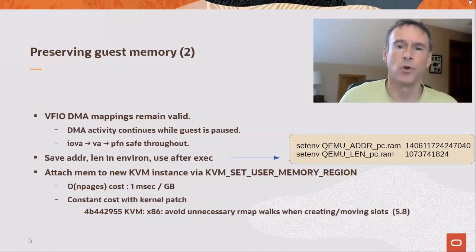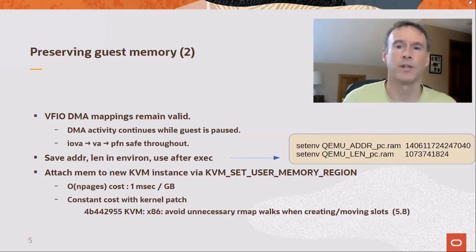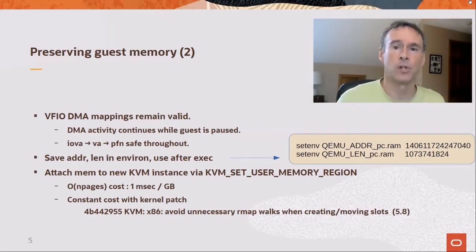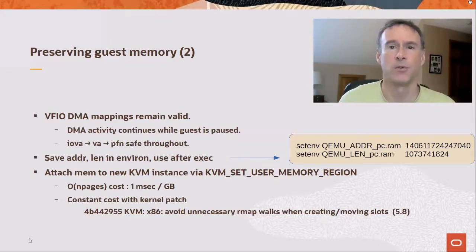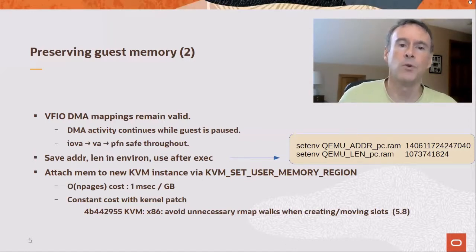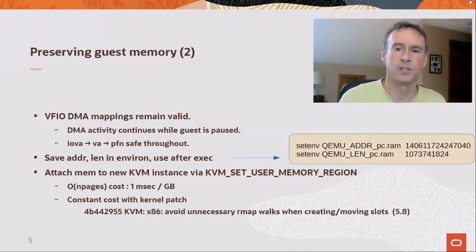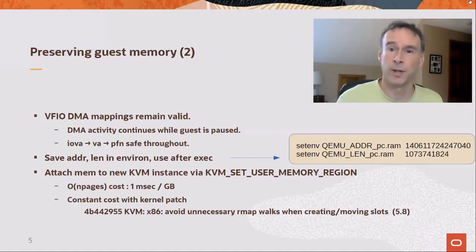When madvise is used for QEMU, the DMA mappings remain valid at all times. DMA activity from posted requests continues even while the guest is paused. It is safe to translate IOVA to virtual address and page throughout the transition, so asynchronous kernel threads may safely create and access the DMA regions. QEMU saves the address and length of the preserved memory regions in environment variables tagged with the name of the region. In the example at right, the pc.ram region is remembered in the environment with values for both the address and the length.